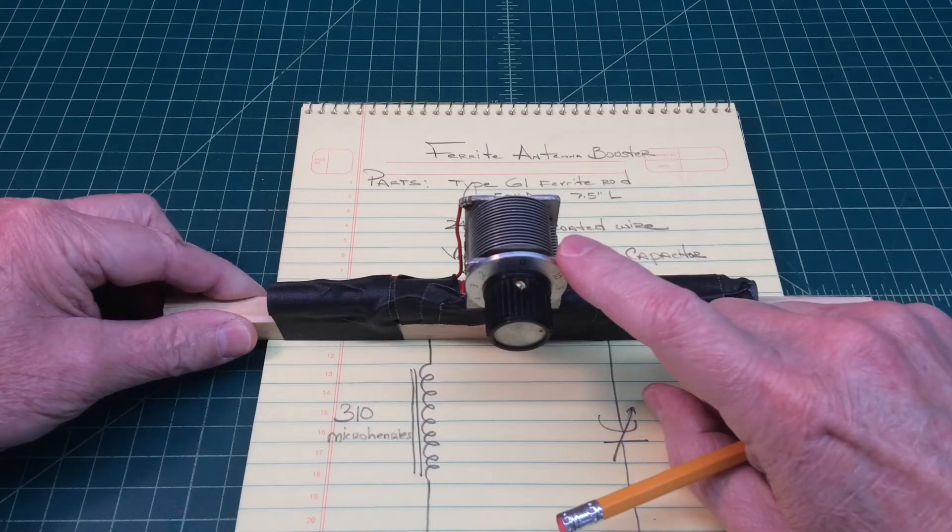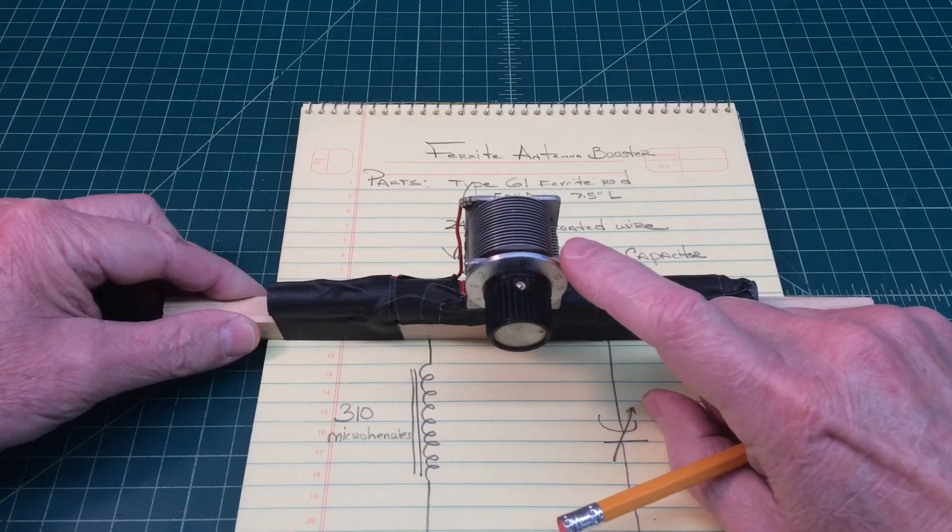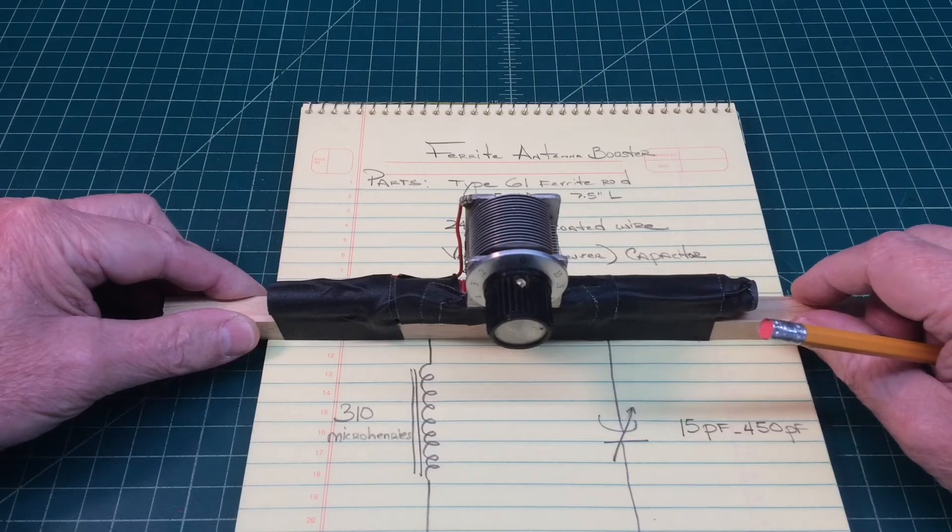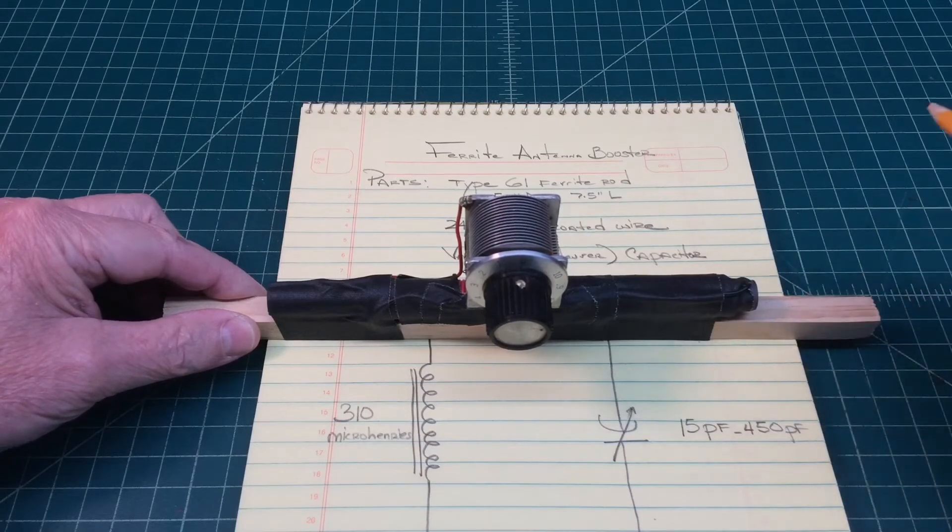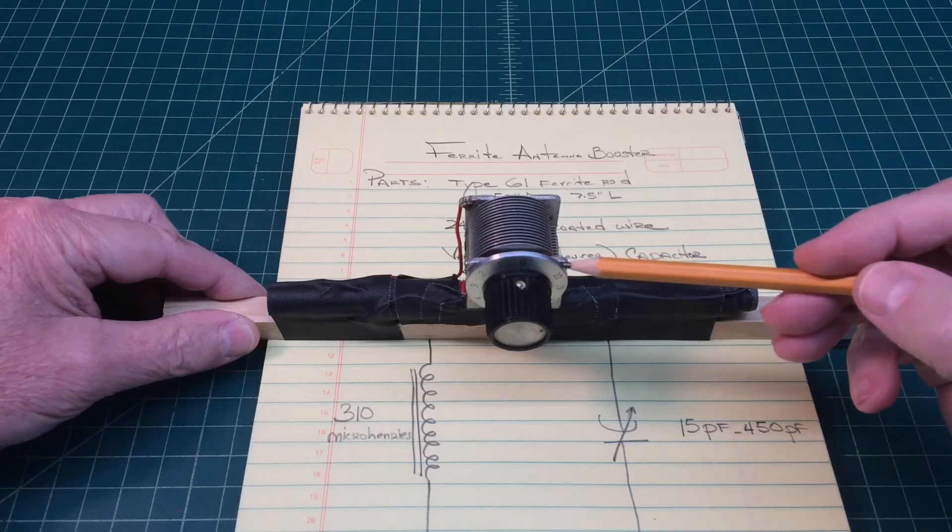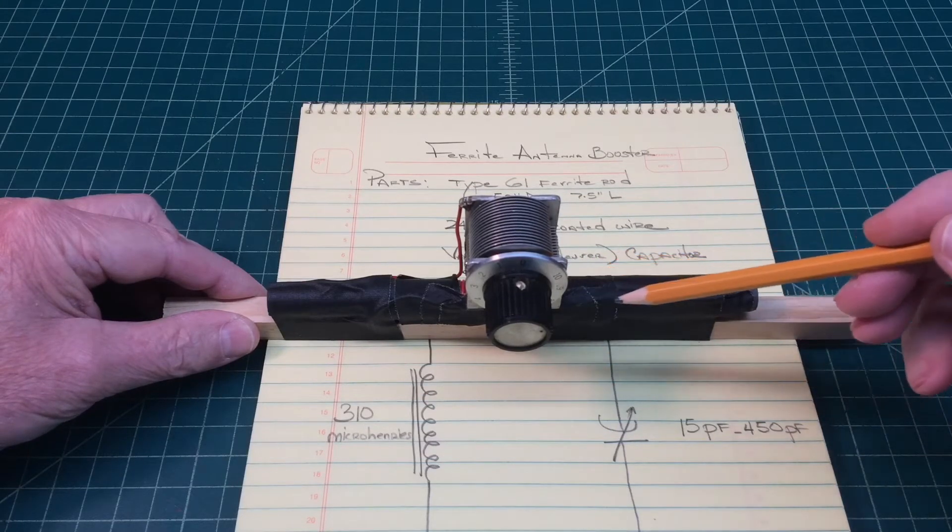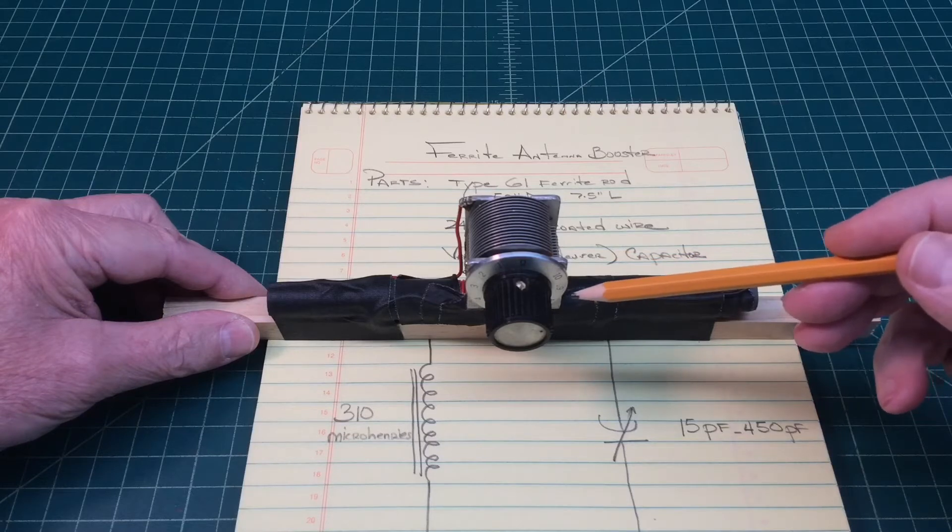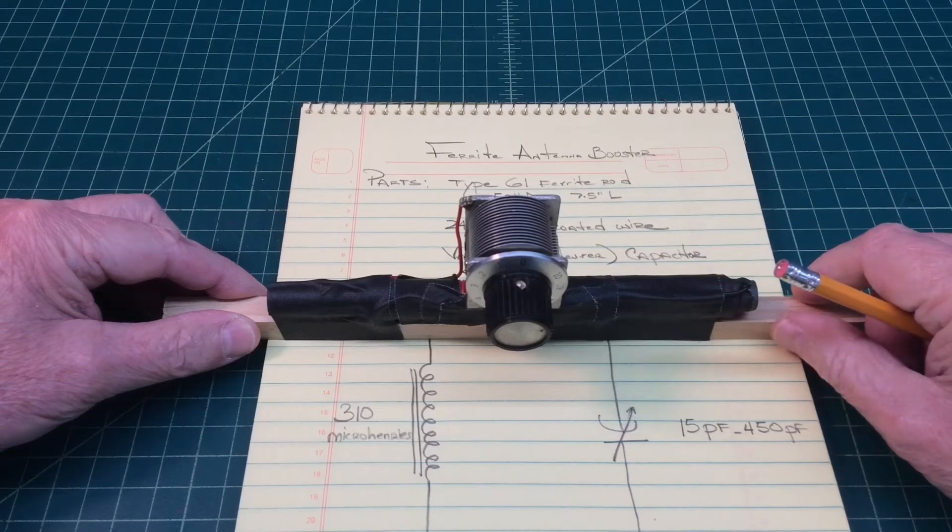So that's what you have here in front of you. It's nothing more than a variable tuning capacitor or condenser, as I like to refer to them as. The value on this one, I checked on the LCR meter, was around 15 picofarad up to 450 to 460 picofarad.